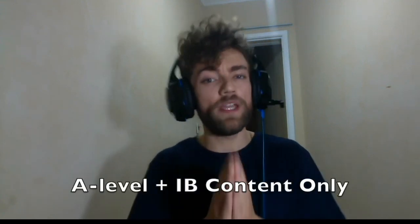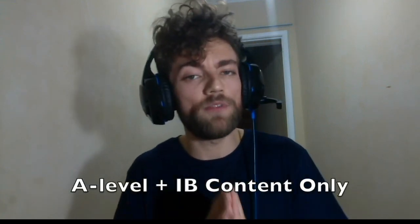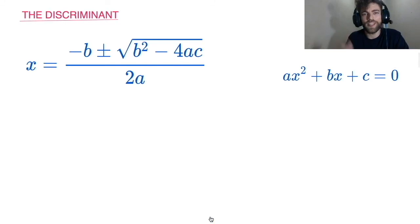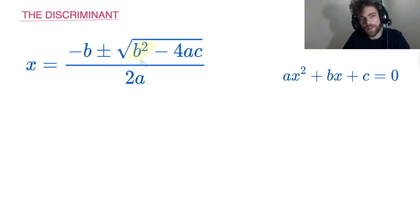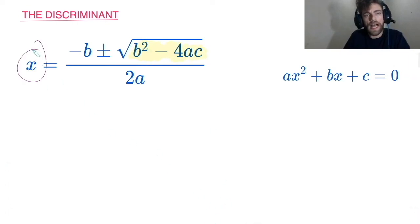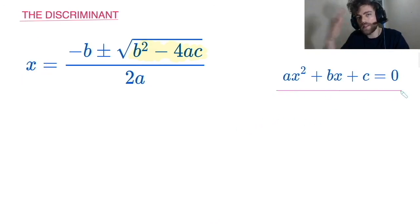GCSE students, you're done for the day — from here on it's A-level and IB students only. A-level and IB students, that brings us on to the discriminant, which is the expression B squared minus 4AC under the square root of the quadratic formula. It is incredibly important because it tells me how many roots — how many solutions — this equation will have.